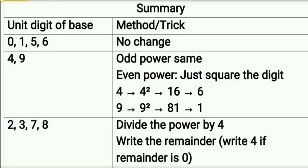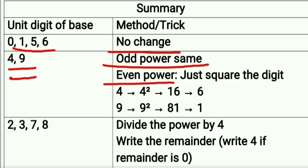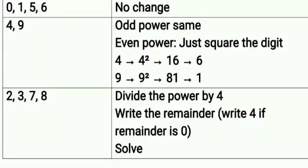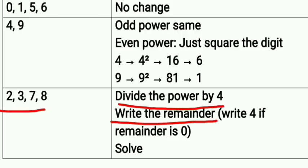Whatever you learned today is summarized in this table. For digits 0, 1, 5, 6: no change at unit place. For digits 4 and 9: odd power → unit digit stays the same; even power → square the digit (4 power even gives 6, 9 power even gives 1). For digits 2, 3, 7, 8: divide the power by 4, write the remainder (if remainder is 0, write 4 instead), then solve to get the unit digit.